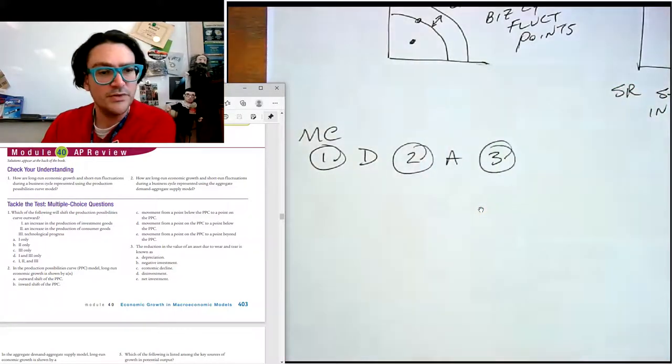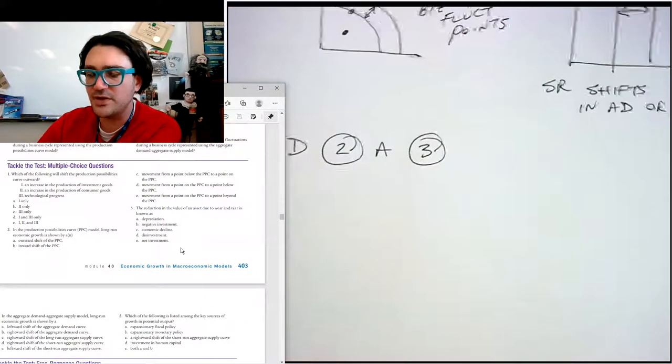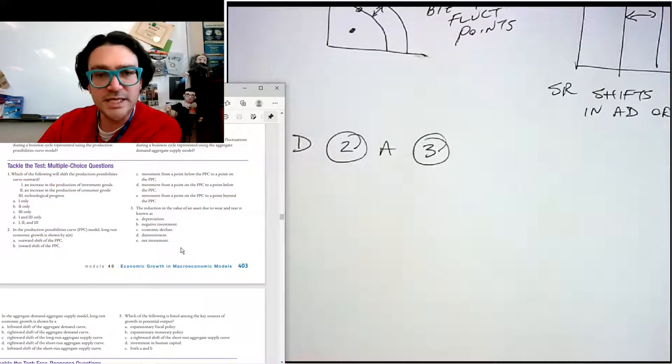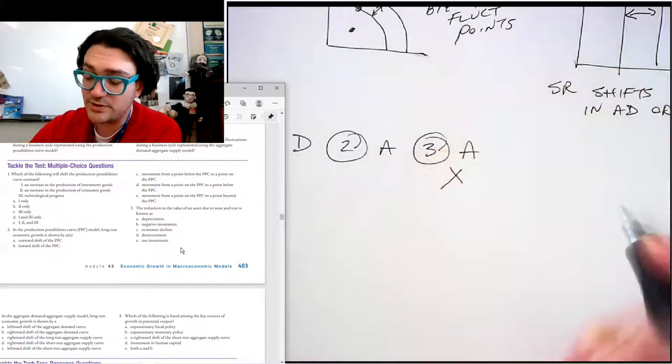Number three, the reduction in the value of an asset due to wear and tear. So this is unlikely you're going to see these on the AP test or anything like that. The correct answer is depreciation. But I am not going to put that one on the quiz.